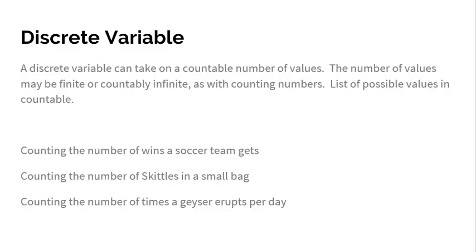The number of values may be finite or countably infinite, as with counting numbers. Think about a list of possible values as countable. If you're talking about a variable that's in the form of a number and that number was counted, that makes a discrete quantitative variable. If you're counting how many wins a soccer team gets - that team got five wins, that team got seven wins, that team got 10 wins - you're simply counting up how many wins they have. That's discrete. You're counting the number of Skittles in a bag: one, two, three, four. That's a discrete quantitative variable.